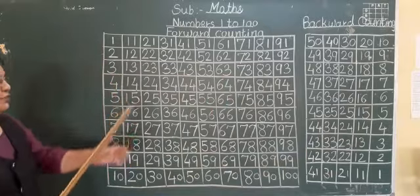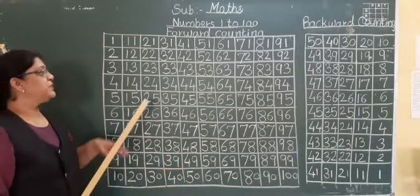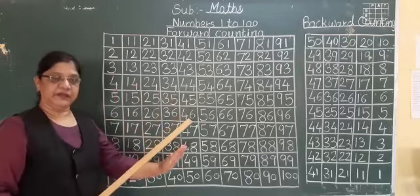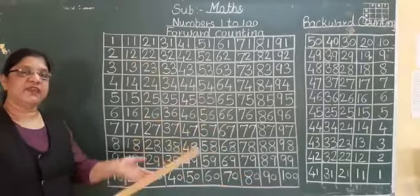Now see, already forward counting is very easy. 1 to 100 you can write easily. Okay, but students say and write. This 1 to 100 say and write. Say with me students.